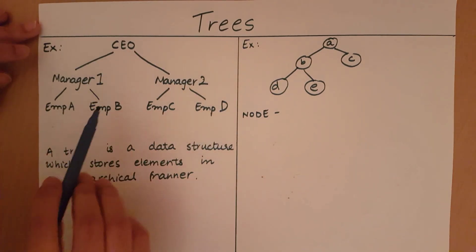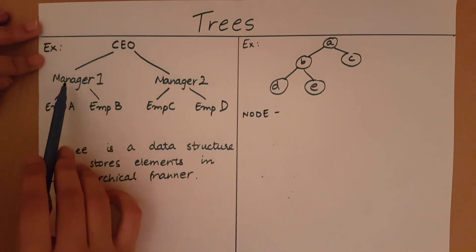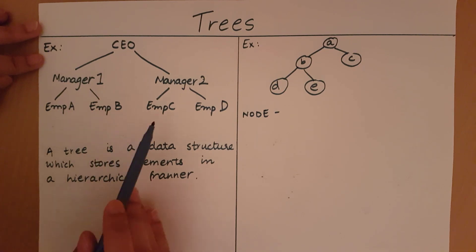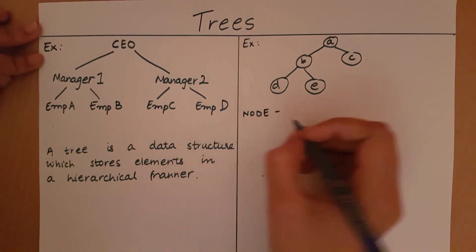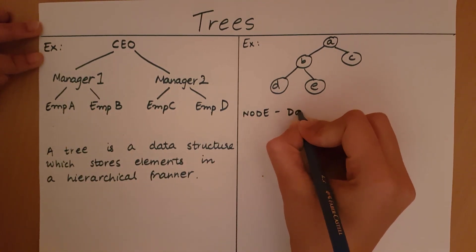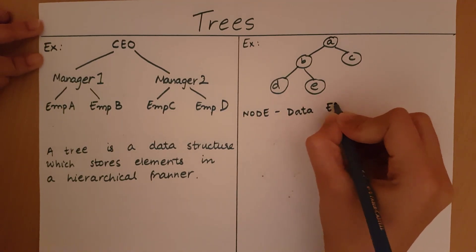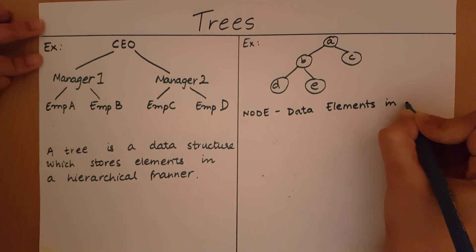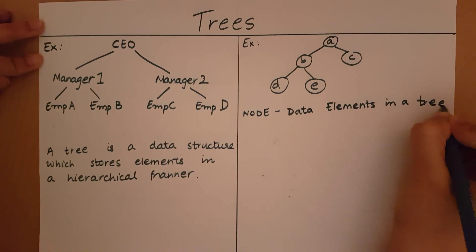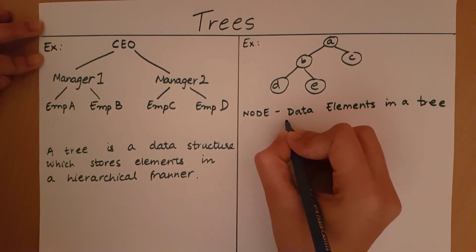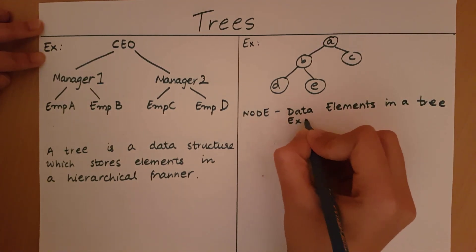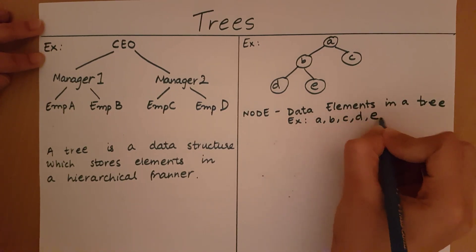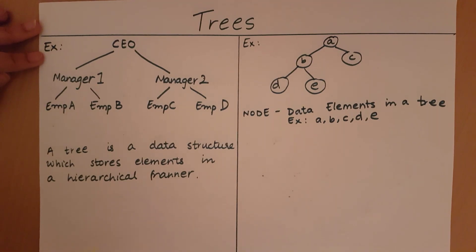In the previous example, the nodes were CEO, manager one, manager two, employee A, employee B, employee C, and employee D. So a node is going to be the data elements of a tree. In this example we have A, B, C, D and E as our nodes.